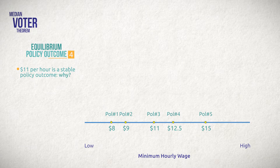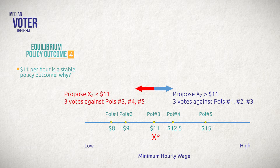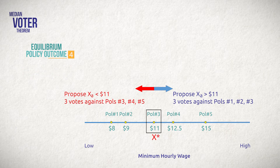So let's explore why eleven dollars is an equilibrium outcome. Here I represent an equilibrium policy with X star. For any proposed alternative that increases the minimum wage above eleven dollars, policymakers number one, two, and three will vote against it. So eleven dollars wins versus any higher minimum wage proposal. Similarly, for any alternative proposed that decreases the minimum wage below eleven dollars, policymakers number three, four, and five will vote against it. So eleven dollars also wins versus lower minimum wage proposals. Notice that policymaker number three is the key voter in both scenarios — number three will vote against any alternative policy to eleven dollars. Also notice that policymaker number three represents the median policymaker. There are two policymakers to the right of number three and two policymakers to the left of number three.